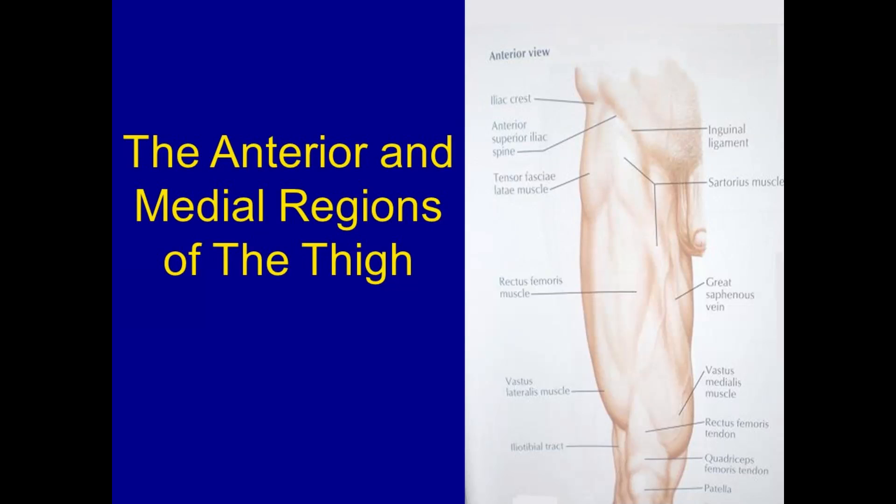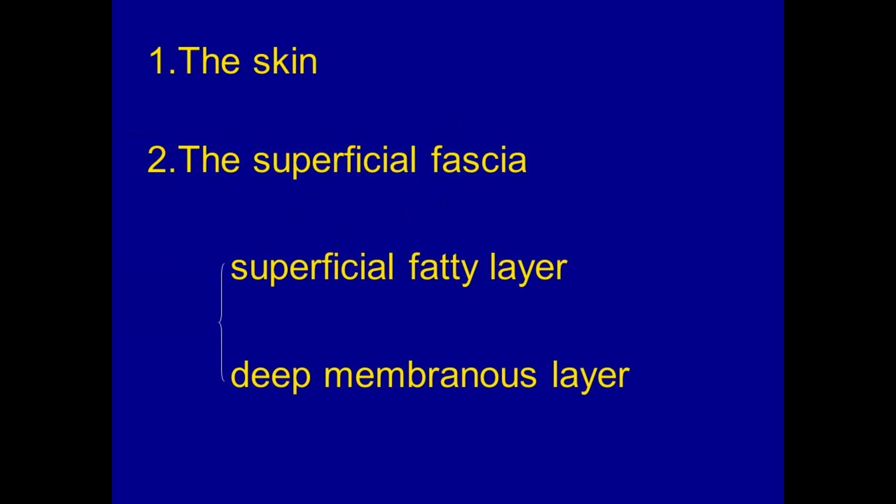The anterior and medial regions of the thigh consist of several layers: the skin, the superficial fascia — which includes a superficial fatty layer and a deep membranous layer.